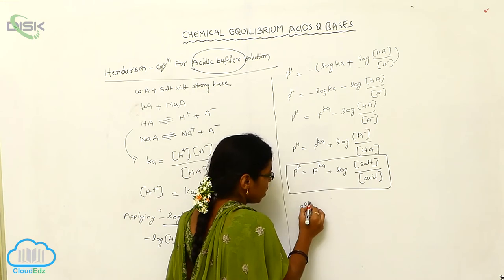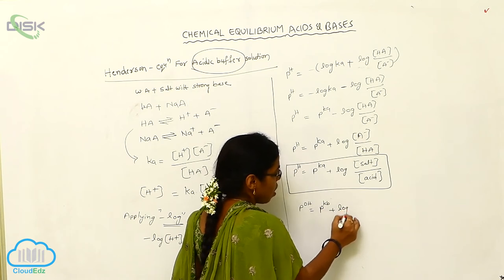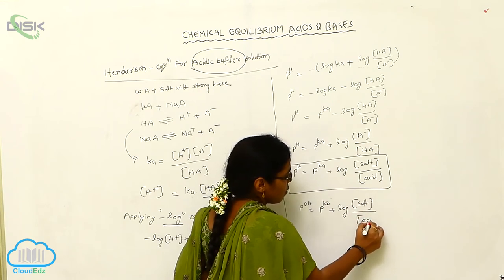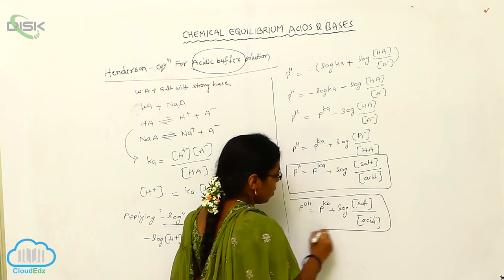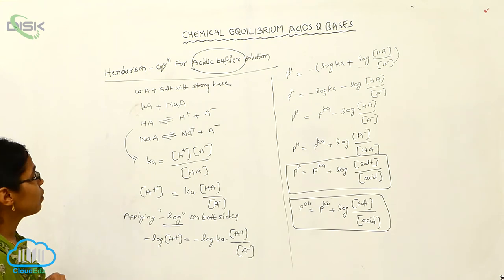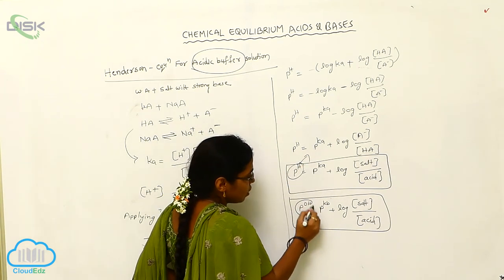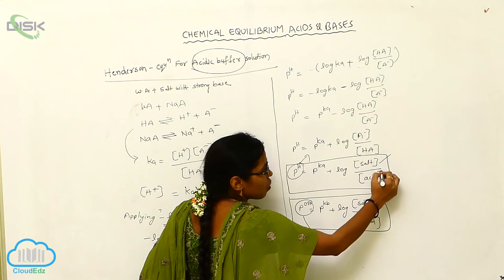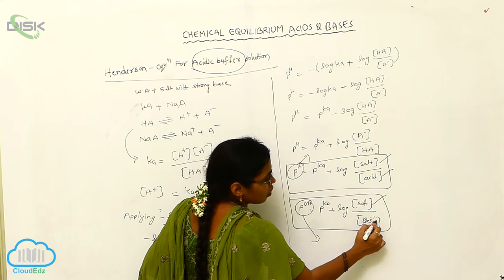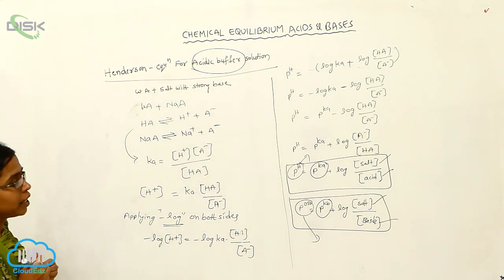For bases, we can write: pOH = pKb + log([salt]/[base]). So both pOH and pH forms are Henderson equations — used for calculating pH values. The first is for acids using pKa, and the second is for bases using pKb, both using the concentration of salt and acid or base respectively.